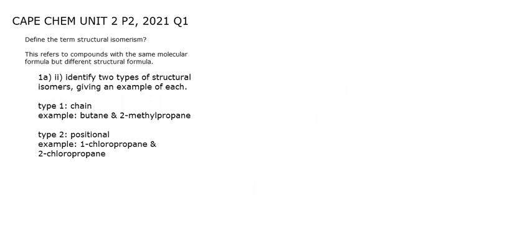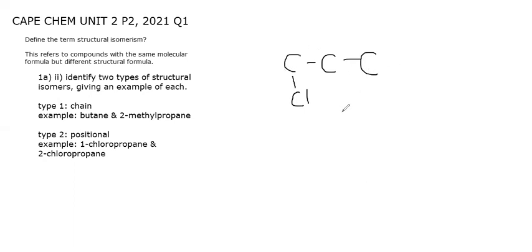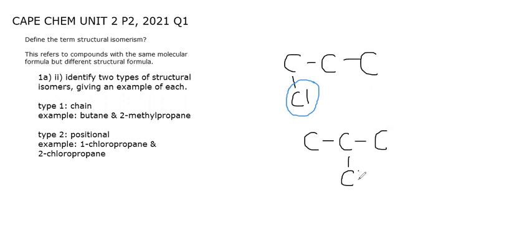For positional isomerism, we are not going to change the connectivity of the carbon atoms. In this example, when we have a substituent group or a functional group — for example if we have 1-chloropropane — for positional isomerism all we need to do is change the position of the substituent group. So with 1-chloropropane we just need to switch it, and we have 2-chloropropane.